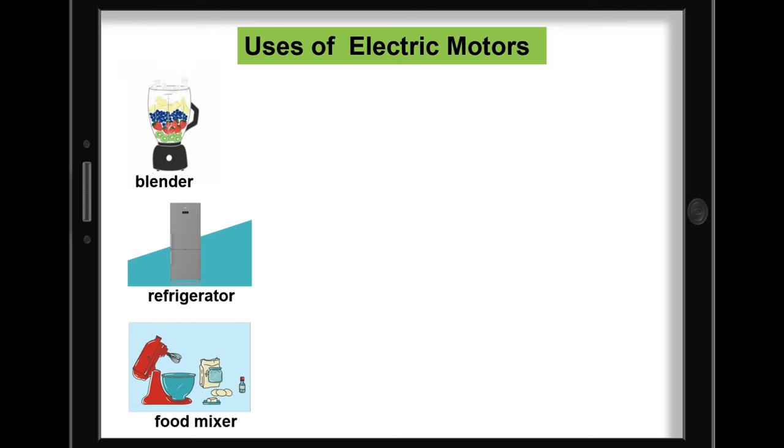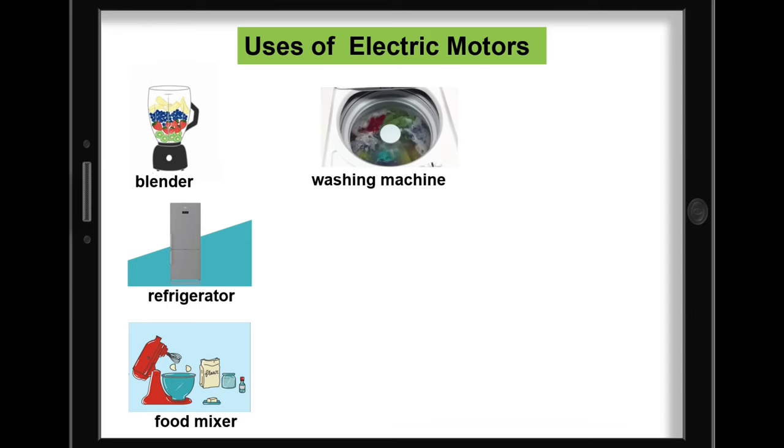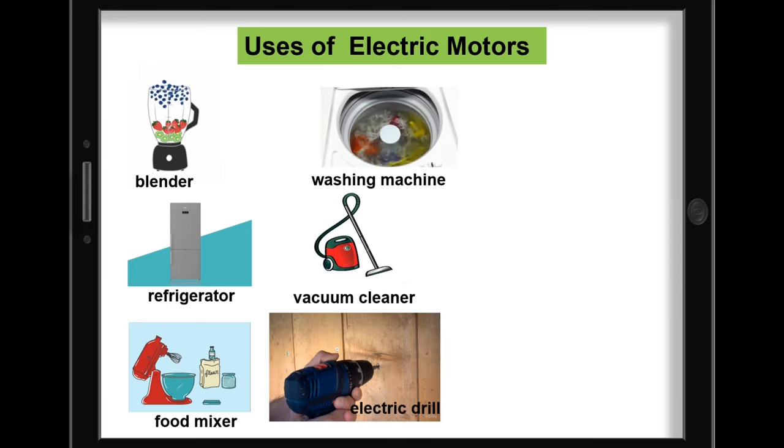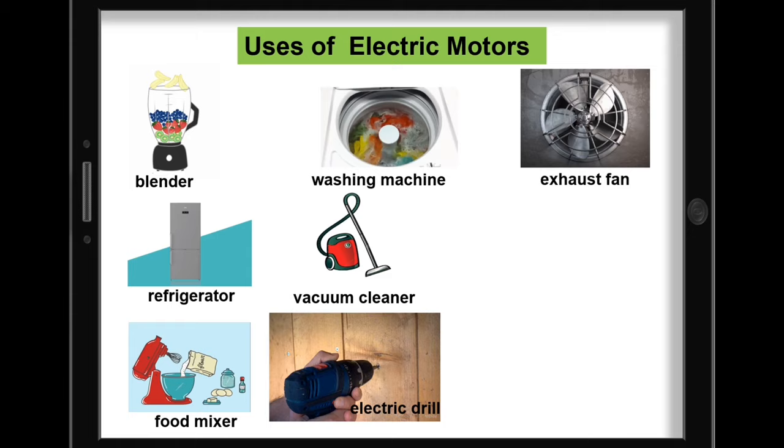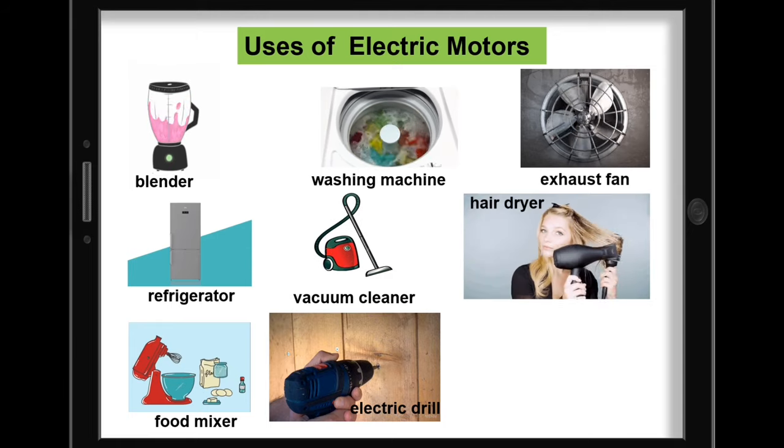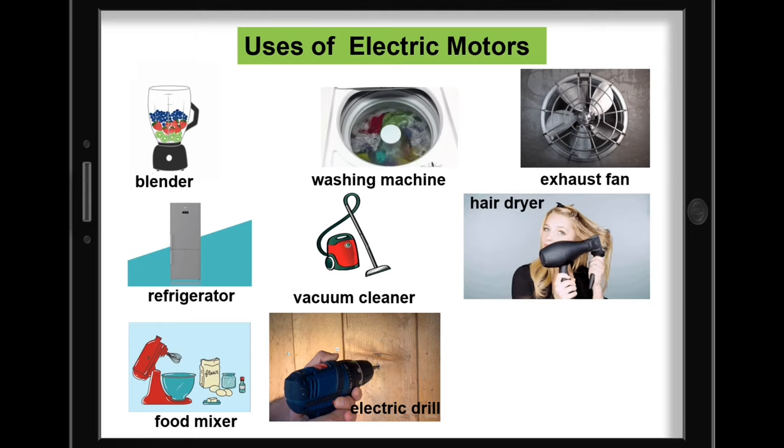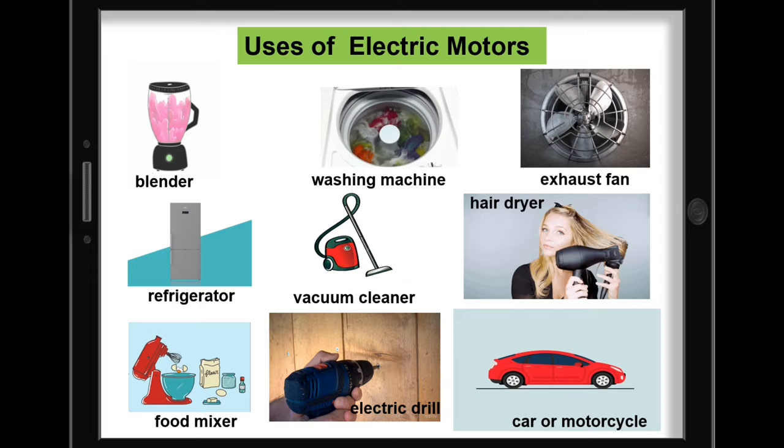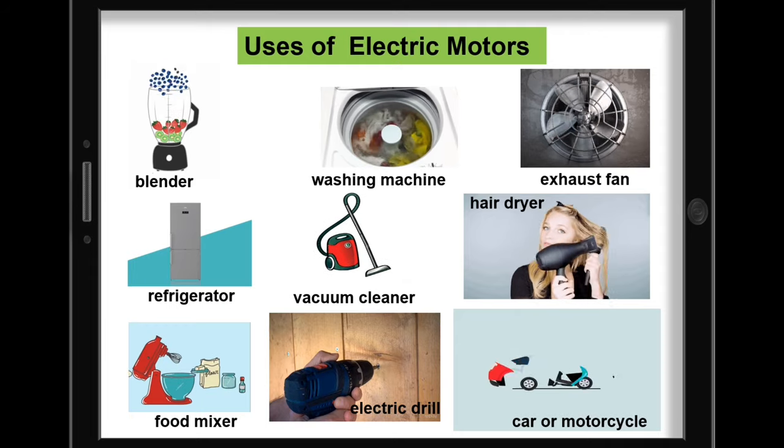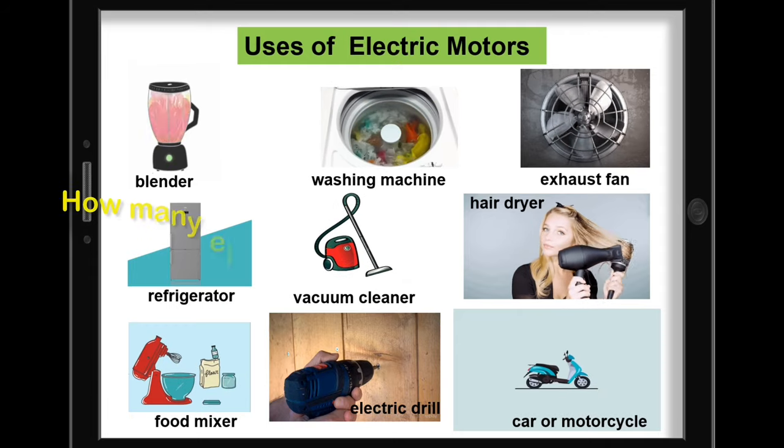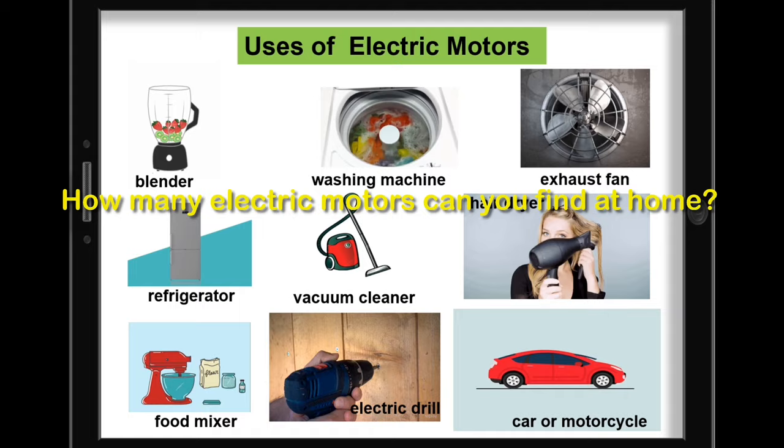In the utility room, there is an electric motor in the washing machine, the vacuum cleaner, and even in the electric drill. Even in the bathroom, there is a motor in the exhaust fan and even in the hair dryer. Your car or motorcycle is loaded with electric motors too. So how many electric motors can you find at home?